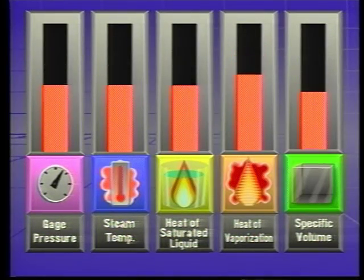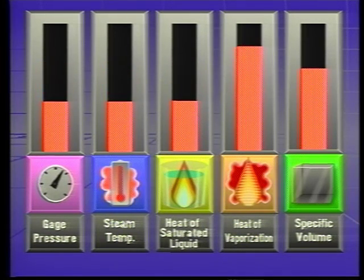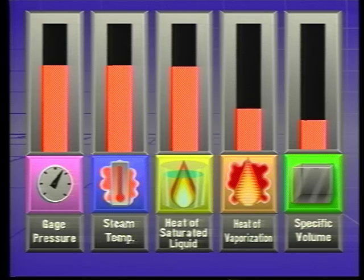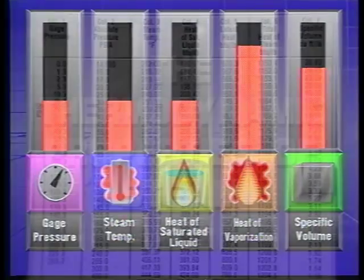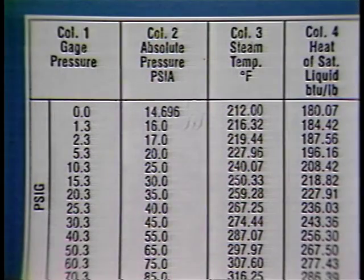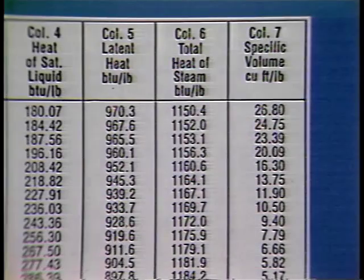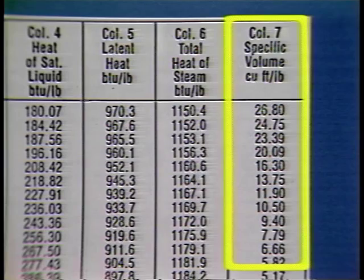The effect of changing pressure on steam temperature, the heat of the saturated liquid, the heat of vaporization, the total heat of the steam, and specific volume are recorded on a table called the thermodynamic properties of steam — a standard industry reference. If a specific temperature is required for a process, the tables show the pressure at which that temperature occurs. The specific volume column can be used for flow rate calculations.